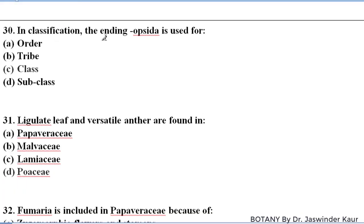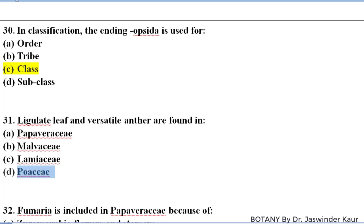In classification, the ending -opsida is used for the class. Ligulate leaf and versatile anther are found in family Poaceae, also known as family Graminae.